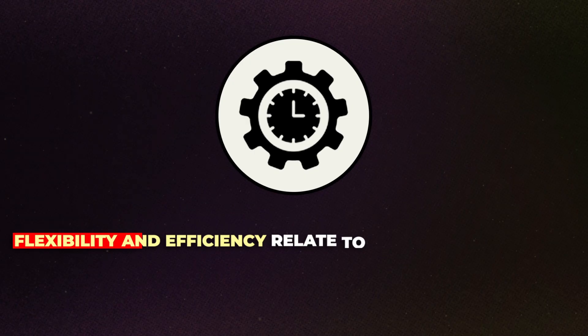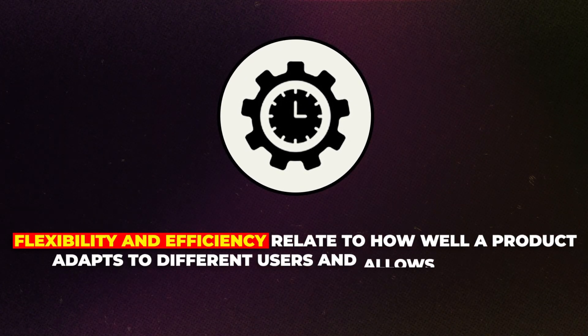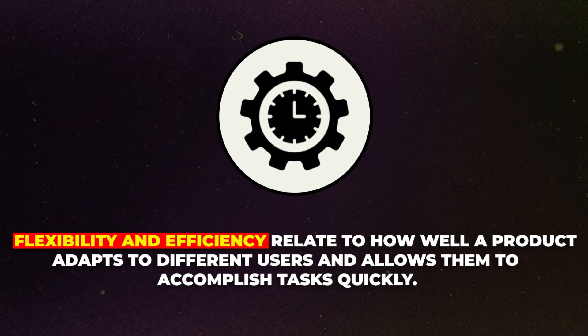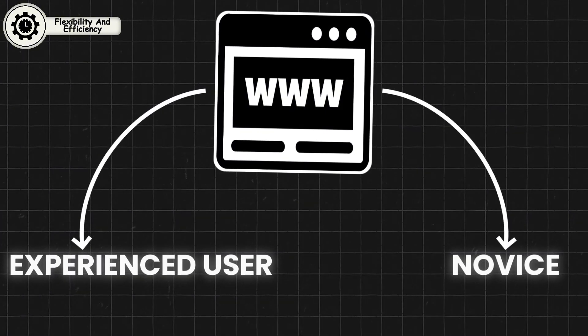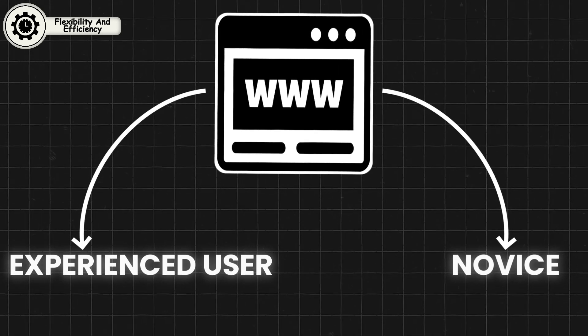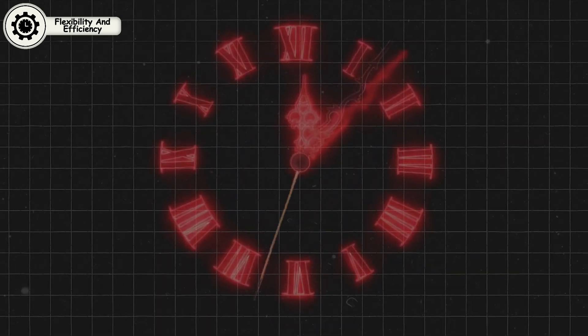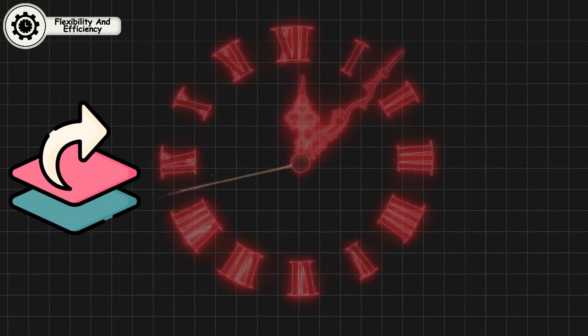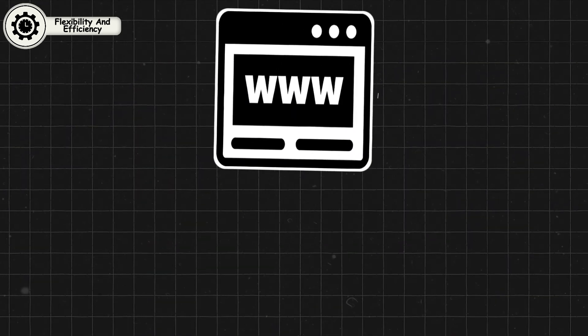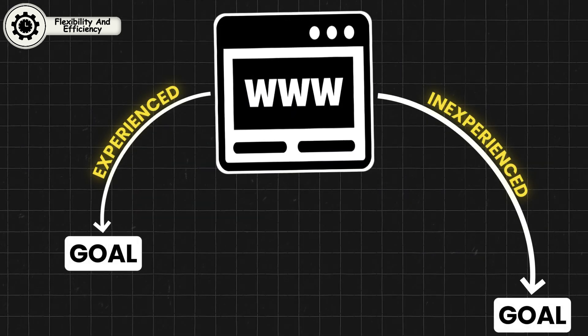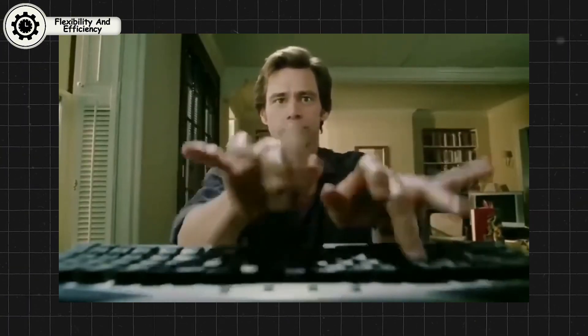Flexibility and efficiency relate to how well a product adapts to different users and allows them to accomplish tasks quickly. Flexibility means that the interface provides options for both novice and experienced users, offering basic and advanced features without overwhelming either group. Efficiency refers to how fast a user can complete a task, often aided by shortcuts or customization options. A flexible design is scalable, offering a range of ways to achieve the same goal depending on the user's experience level. Efficiency often comes into play for power users who rely on the product daily and need advanced tools to speed up their workflows.